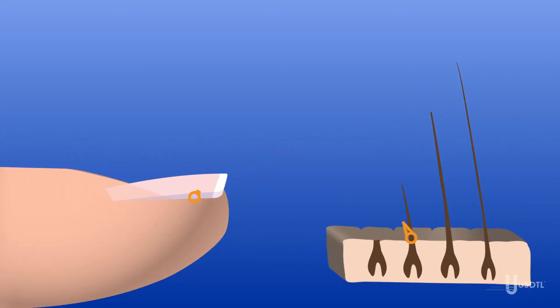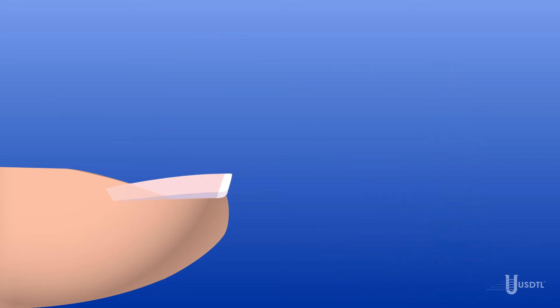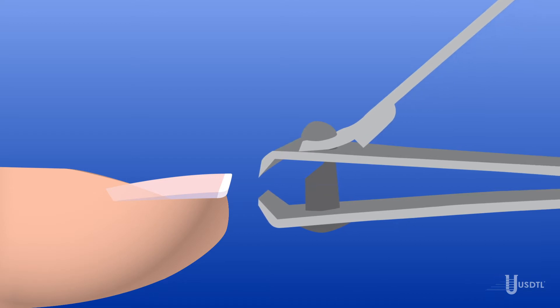Unlike hair, nail is four times thicker, so more keratin layers protect the compounds captured in the specimen. It is easier to collect because the donor clips their nails during collection.